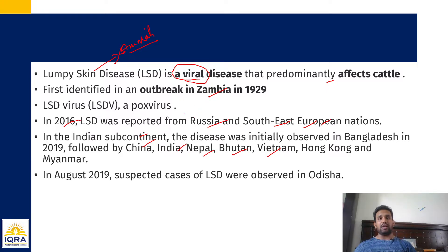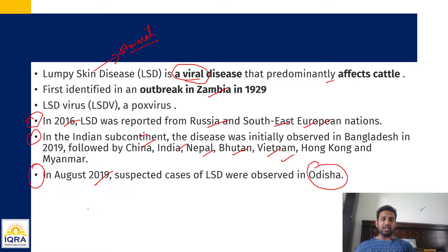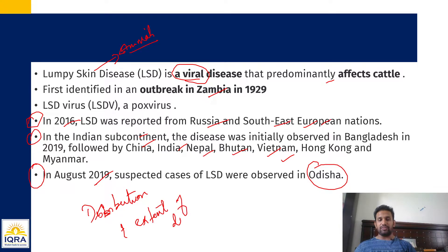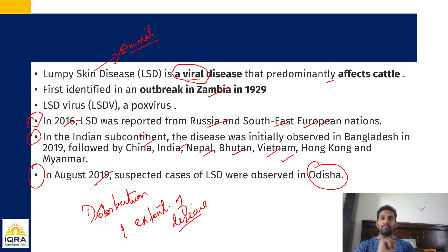India mein sabse pehla case Odisha mein 2011 mein dekha gaya hai. Yeh teen points hain — distribution and extent of disease. Aap yeh bhi yaad rakhna hai ki agar question exam mein aaye: lump skin disease is basically endemic to African countries — wrong; endemic to American countries — wrong. Now it is spreading even to Asia, South Asia, Europe — everywhere.